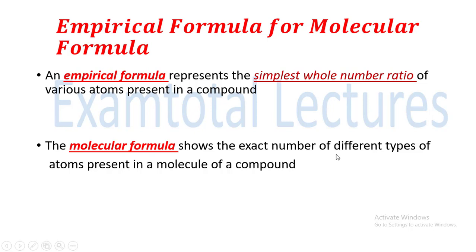The molecular formula shows the exact number of different types of atoms present in a molecule of a compound. The empirical formula gives the ratio, and the molecular formula gives the exact number of different elements in the compound. To find the empirical formula, you need to know about the percentage composition. If you know the mass percent of various elements in a compound, you can easily find the empirical formula, and with empirical formula and molar mass, you can find the molecular formula.